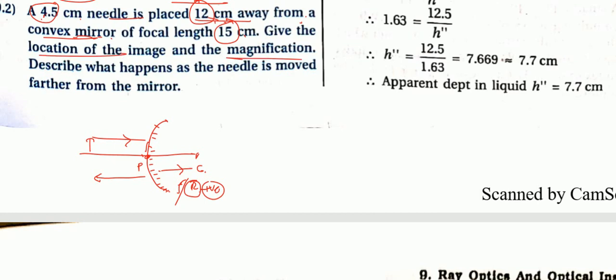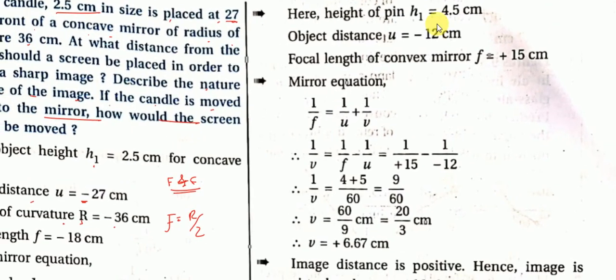We need to find the location and magnification. Using the mirror formula: 1/v = 1/f minus 1/u. f = 15, u = minus 12, so minus minus becomes plus. Taking LCM of 60: we get (12 + 15) upon (12 × 15), which gives 27 upon 180. Therefore v = 180/27 = 20/3 ≈ 6.67 cm.